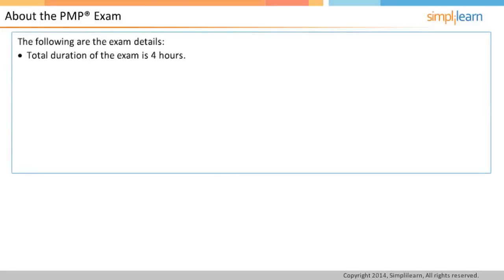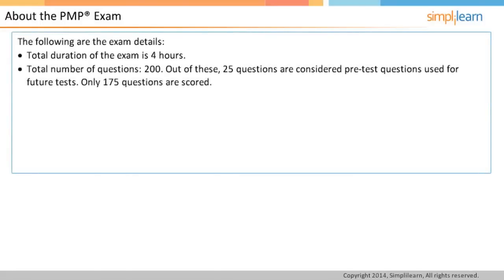The PMP exam is conducted for four hours. It covers 200 questions, out of which 25 questions are considered as pre-test questions used for future tests and are not scored. You will not be communicated about these questions — they might be any random pick. Therefore, you should answer all 200 questions with the same seriousness. PMI includes these questions to see how many test takers are getting them right. Based on this, they might decide to include these questions in the future exam. It is similar to a survey conducted by PMI.